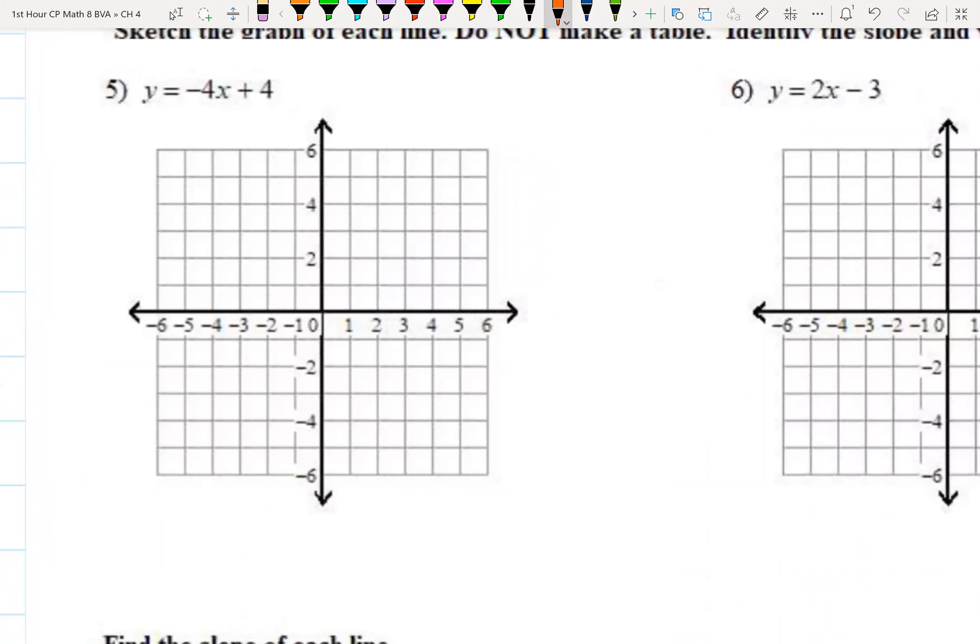So we remember slope-intercept form, y equals mx plus b, where b is your y-intercept and m is your slope. So let's go find each one of those.